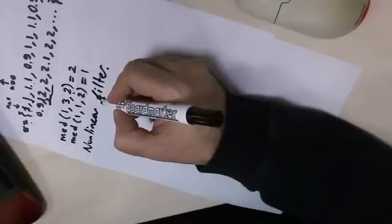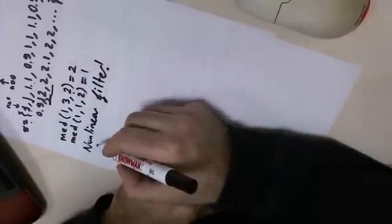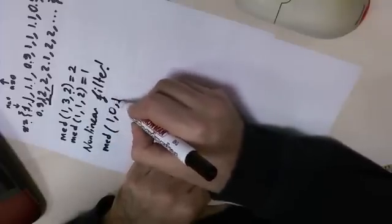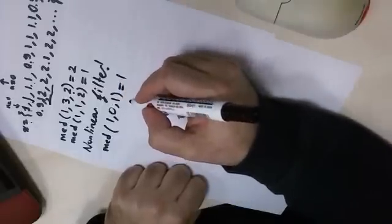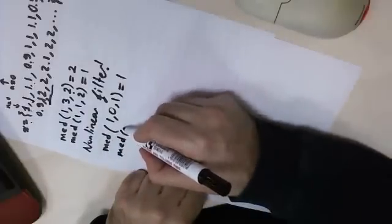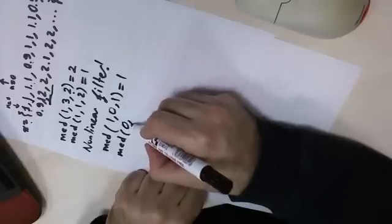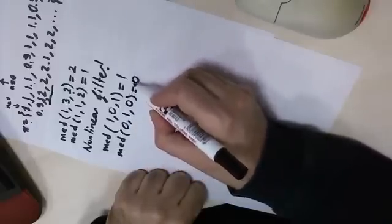Now this is a nonlinear filter. For example, if you have 1, 0, 1 as your input to the median filter, the output is 1. Then the median of 0, 1, 0 — in this case the median value is 0.